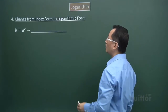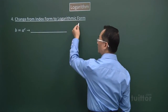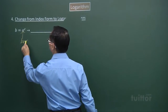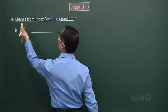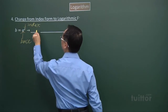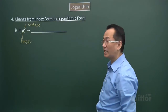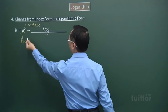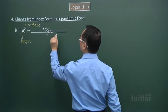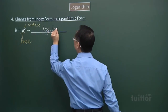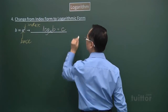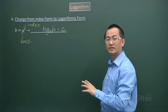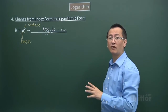For point 4, we change from index form to logarithmic form. Given A to the power C equals B, where A is the base and C is the index, we write the logarithmic equation as: log base A of B equals C. We must be able to switch freely between index form and logarithmic form.